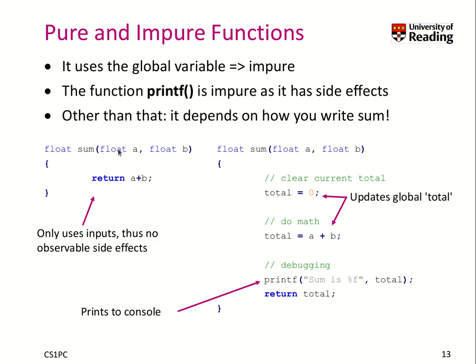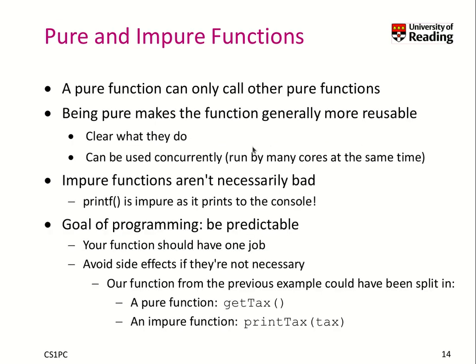On the right-hand side, we see a function which uses the global variable total and even prints to the terminal, so that one would be impure. It's logical that a pure function can only call other pure functions — if it calls one impure function, it becomes impure.